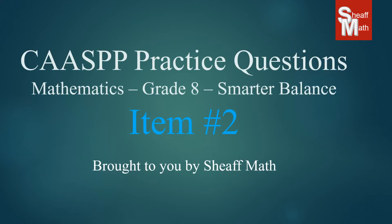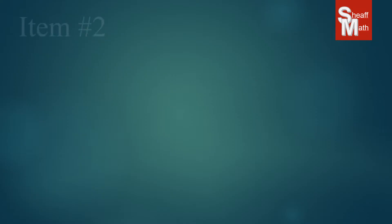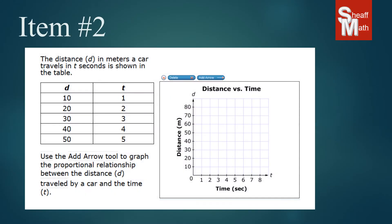CASPI practice test item number two. Our second item is a table, a function table with a graph. This function table represents the distance in meters that a car travels, and the t represents the seconds in which it's traveling.